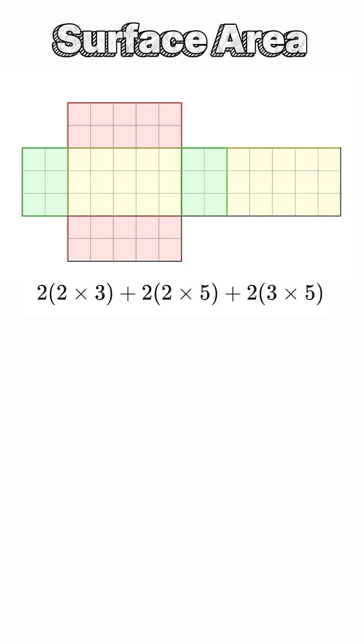Next, we find the area of each type of face. A 2 by 3 rectangle has an area of 6 square units. Since there are two of these faces, their combined area is 12 square units.